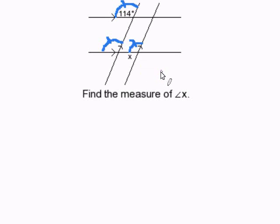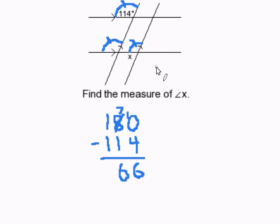So now all we have to do is our math. We can say 180 degrees minus 114 degrees and we'll subtract and get 66. So the measure of angle x is then 66 degrees and that completes our problem.